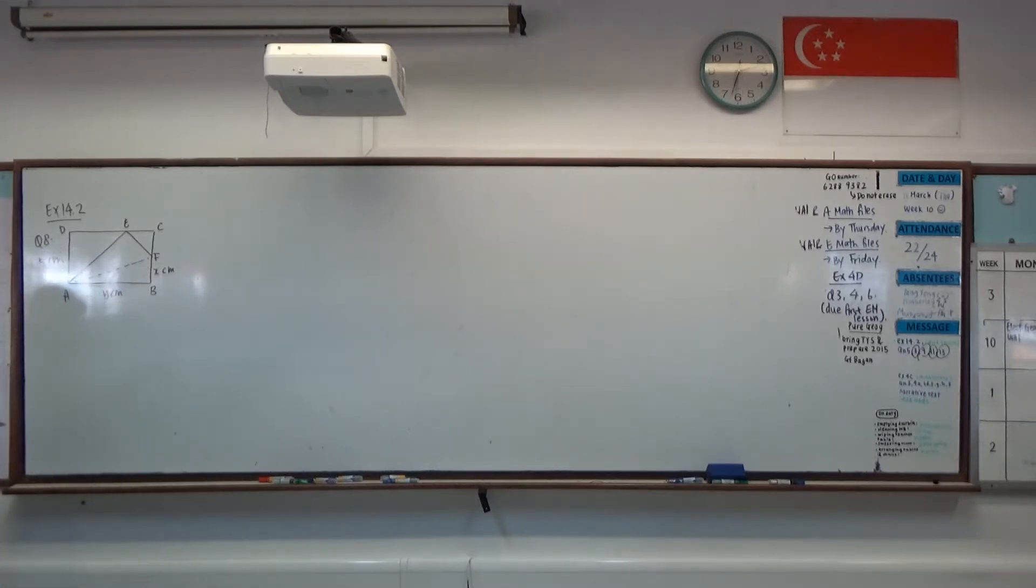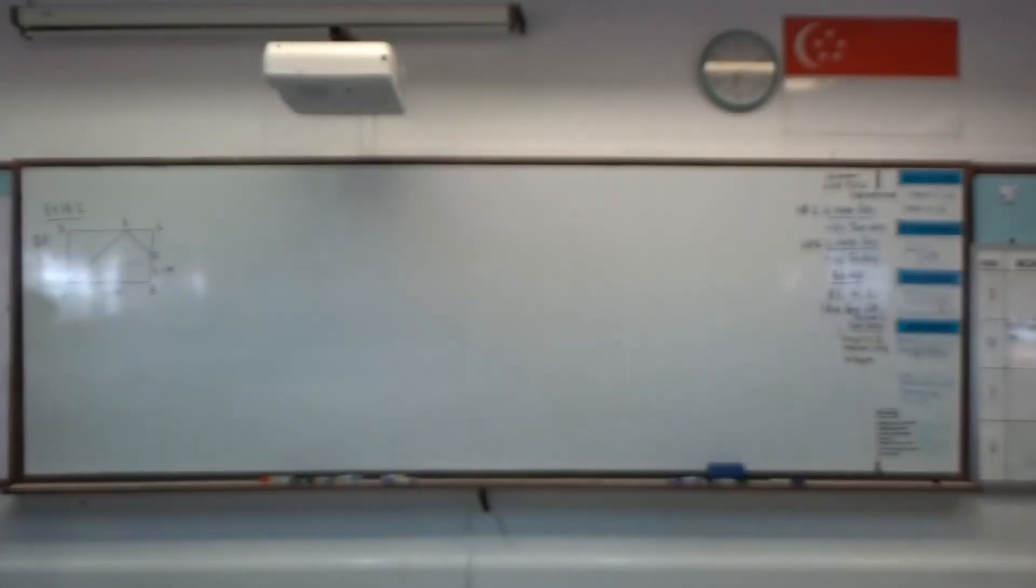The diagram shows a rectangular piece of paper, ABCD, such that AD is 5cm - that means the breadth is 5 - BF is X cm and AB is Y cm. All this shown on the diagram.